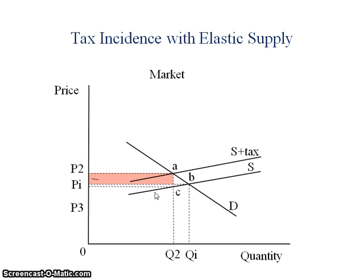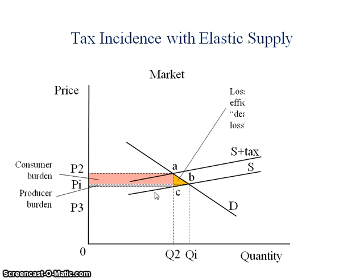Relatively speaking, it's going to be the consumer that bears most of the burden of this taxation. This is because of the elastic supply — as a result of the imposition of the tax, the producer has been able to make some changes fairly quickly, meaning he's able to shift out of producing this particular good or service and produce something else, so it's going to leave the consumer with paying the brunt of this particular tax. Note again the deadweight loss to society because of the imposition of the tax at triangle ABC.